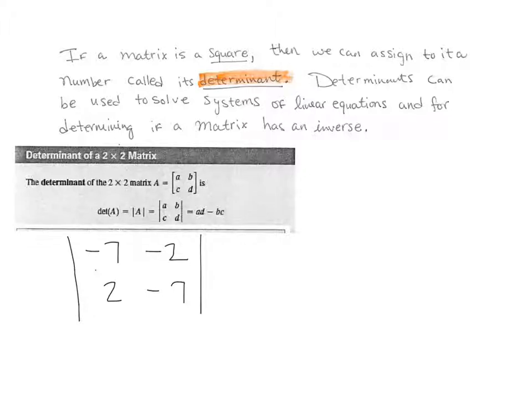I'm going to read this statement to you: If a matrix is a square, meaning it has the same number of rows and the same number of columns, then we can assign to it a number called its determinant. So a determinant is just a number obtained from a matrix.